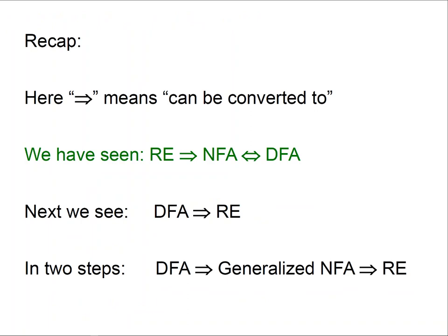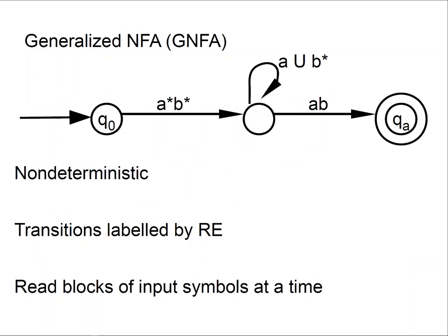We've seen that NFAs are equivalent to DFAs and that REs can be converted to NFAs. The next thing is that a DFA can be converted to an RE. This is going to be done in two steps: we are first going to convert a DFA to a Generalized NFA (GNFA), and that will then be converted to an RE. A GNFA is like an NFA except that the transitions are labeled by REs — instead of having transitions labeled by just epsilon or symbols, you put labels which are regular expressions and you read blocks of input symbols at a time.